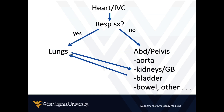Four simple questions, and the exam is pretty straightforward. We'll generally start with the heart and the IVC — that tells us most of the physiology right there. Then we ask: does the patient have respiratory symptoms? If yes, we move to the lungs. If no, we go to the abdomen first and look for things like aortic aneurysm, infectious signs, or signs of abdominal bleeding. Eventually we'll move back to the lungs, aiming for a near-full-body ultrasound in undifferentiated shock patients — think of it as a more detailed, more nuanced FAST exam.